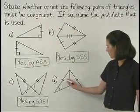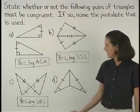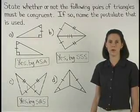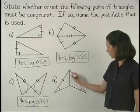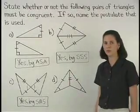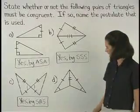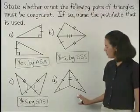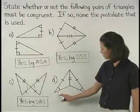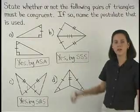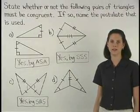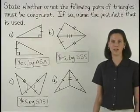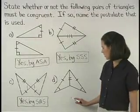In Part D, we have one pair of corresponding sides marked as congruent and a pair of corresponding angles marked as congruent, so we need a third pair of corresponding parts. Notice that these triangles share a side, so we can mark this side as congruent to itself. We now have two pairs of corresponding sides and a pair of corresponding angles. But notice that the angle in each triangle is not included between the two sides, so we cannot use side-angle-side. Instead, we have side-side-angle, which is not one of our postulates for proving that triangles are congruent, so we say that no congruence can be determined.